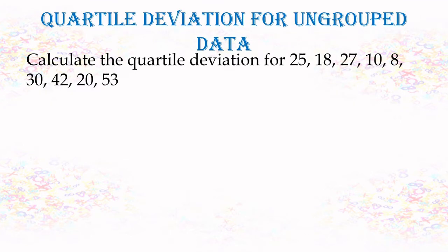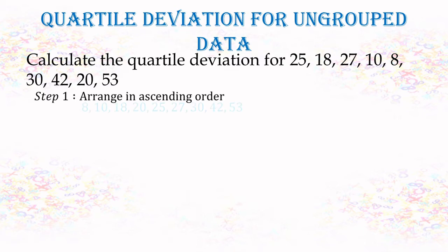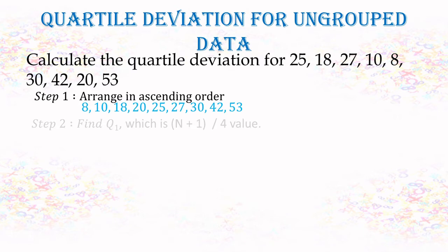Now let us take an example and see how to calculate quartile deviation. In this case the data is raw data, which is not grouped. To find the quartile deviation, first we have to arrange it in order. After arranging, we need to find the first quartile. The first quartile is at the position (n+1)/4, and we check that position to get the Q1 value.